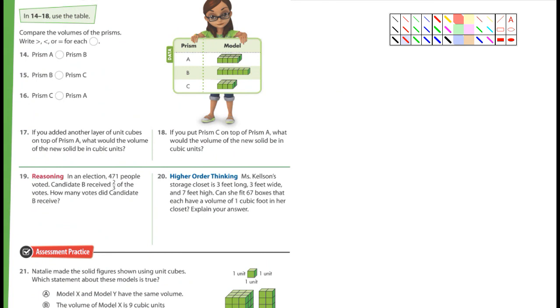Next page. This is page 460. So I want you to do 14, 15, 16. They're asking you to compare the volumes of the prisms. Write greater than, less than, or equal to for each. You can do that. Number 17, I want you to do. It says, if you added another layer of unit cubes on top of prism A, what would be the volume of the new solid in cubic units? So here's prism A. What they're asking is if you added another one that was identical to A on top of it, how many units would it have?